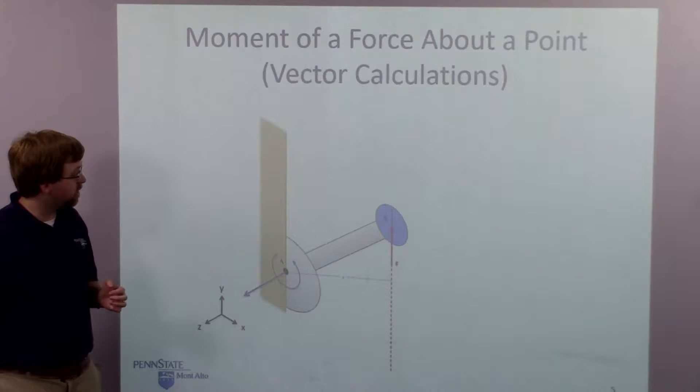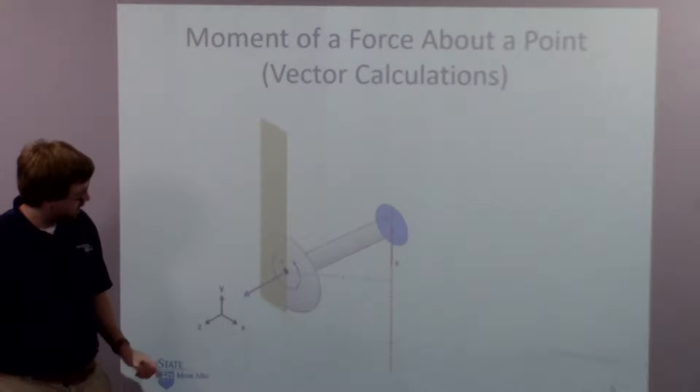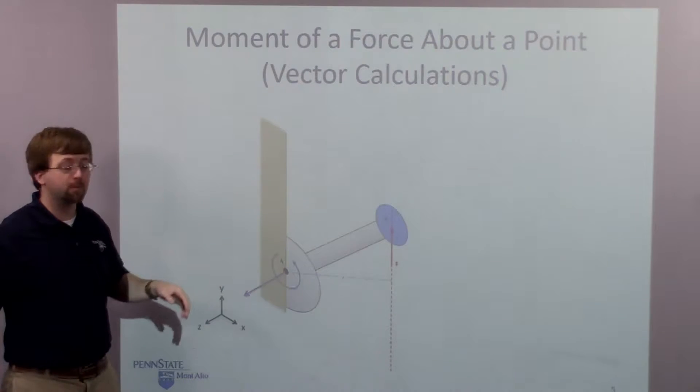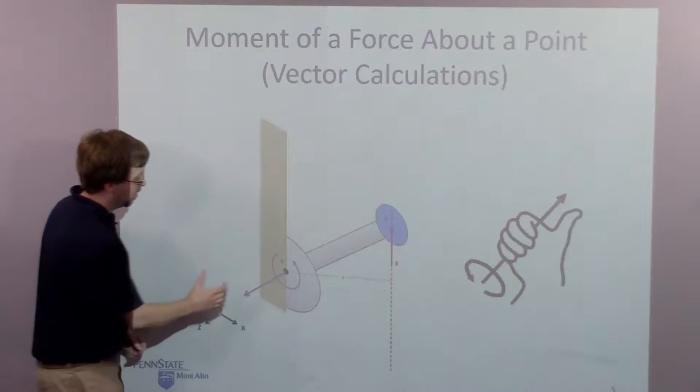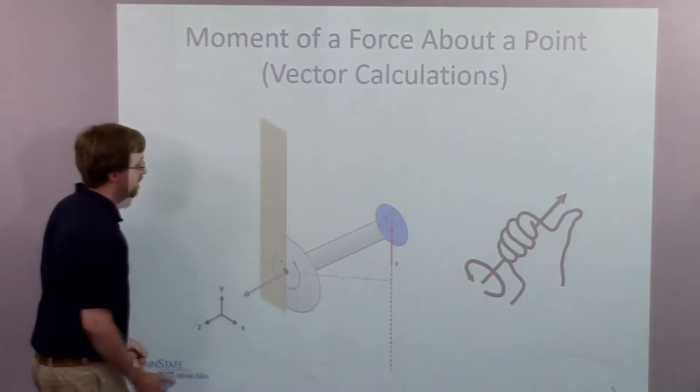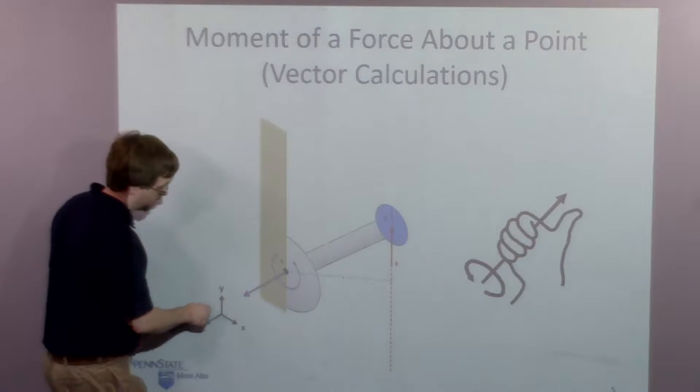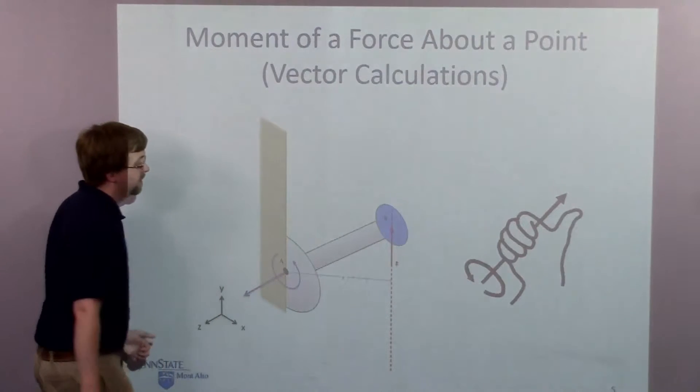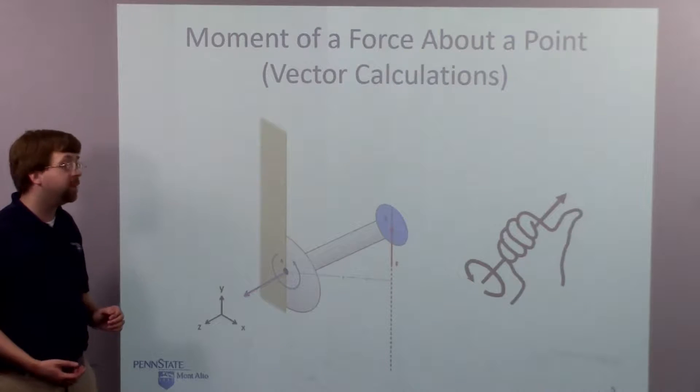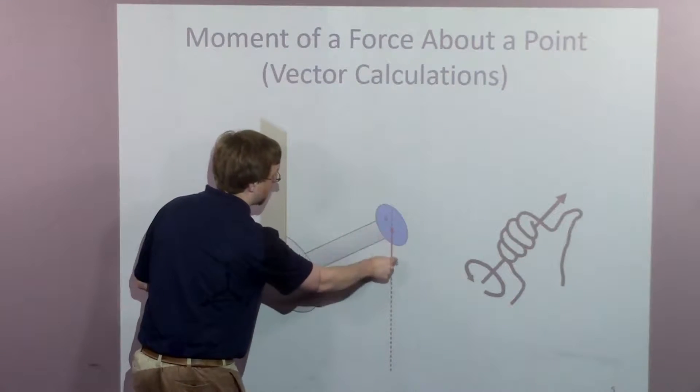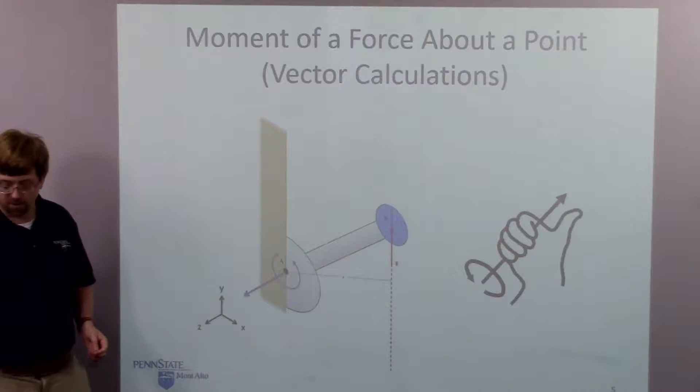And so once we do that calculation, we're going to find that the moment vector is actually going to be, for a 2D problem, it'll be in the z direction. And that's because, using our right hand rule, it would cause a counter-clockwise rotation, a positive rotation, and that's a positive rotation, my thumb is pointing in that z direction. That moment vector is always going to be perpendicular to both the f vector and the r vector. That's the way the cross product operation works.